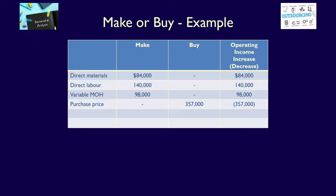On our chart, we would show the same information for direct materials, direct labor, variable manufacturing overhead, and the purchase price from the supplier. However, if the company continued to make the component, they would incur an opportunity cost — the benefit they give up by choosing to continue to make the component. What do they give up? They give up the $40,000 in rent revenue they would have earned had they bought the component. Therefore, under the make column, we add an opportunity cost of $40,000. The buy option has no opportunity cost, so that would be a dash. $40,000 minus zero equals $40,000 under the difference column.